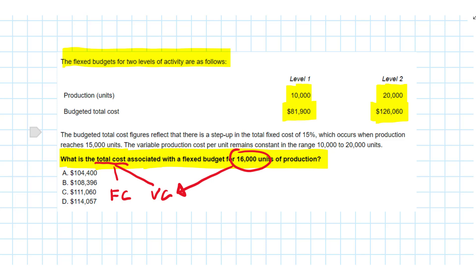So far so good, but we discover something quite tricky. In the budgeted total cost figures there is a stepped cost, a step up in the fixed costs of 15 percent. Here's the tricky part and here's where we will need to use simultaneous equations. The step cost happens at 15,000 units. Luckily the variable cost is constant between 10 and 20,000 units.